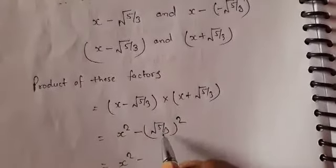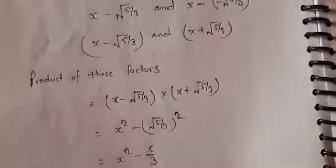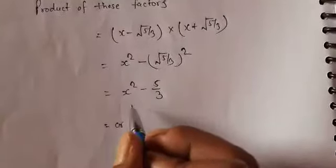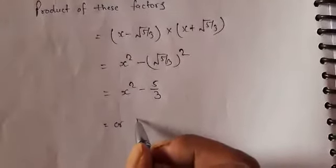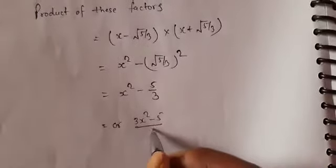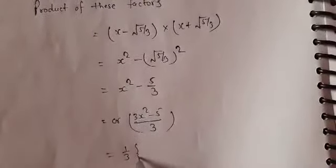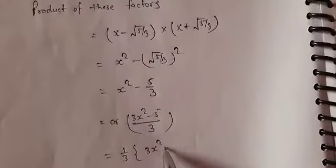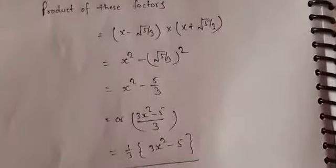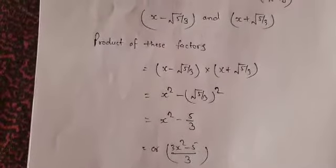So x² − (√5/3)² gives us x² − 5/3. This can also be written by cross-multiplying as (3x² − 5)/3, or equivalently as (1/3)(3x² − 5). This is the product of the given two factors.